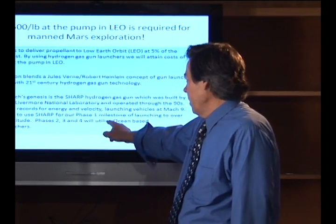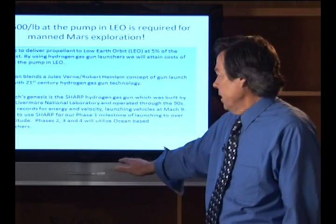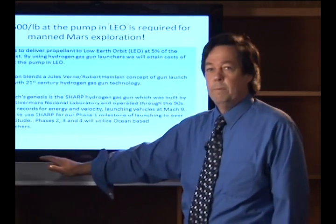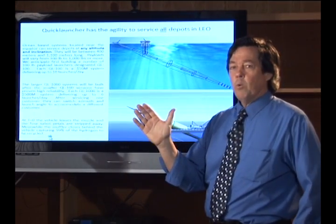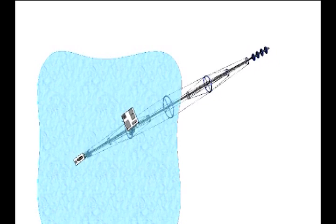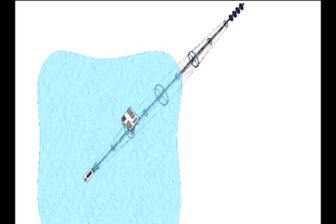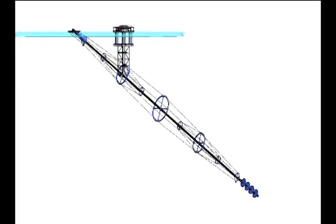Phases two, three, and four are more sophisticated versions, which will be submerged in ocean versions, and those will ultimately launch payloads between a hundred pounds and a thousand pounds into low orbit. The nice thing about this system is it has the agility to service all depots in low-Earth orbit. In other words, if this thing is based at the equator, it can launch to azimuth zero, basically due east, or it can even launch 90 degrees to polar orbits. It can service essentially any customer you want to at any low-Earth orbit altitude.